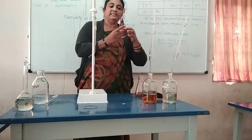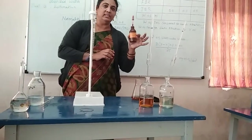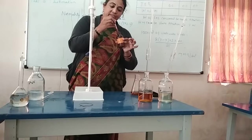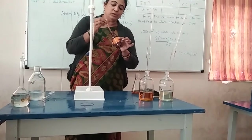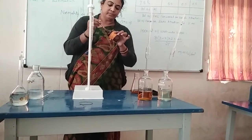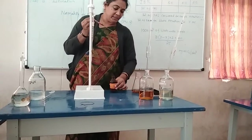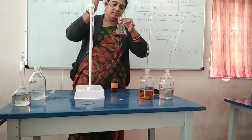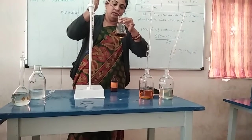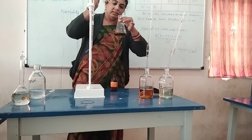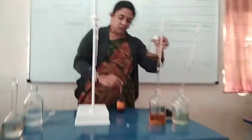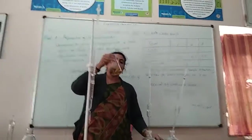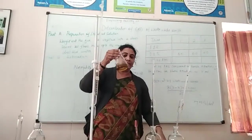This is ferroin indicator. Its chemical composition is ferrous 1,10-phenanthroline sulfate. The important point here is that for all the trials, the same amount of indicator must be added. For each trial, add 6 drops of indicator — 6 drops for all 3 trials equally.